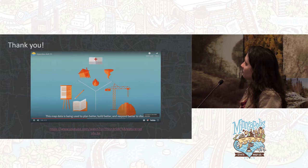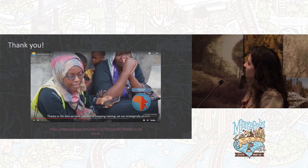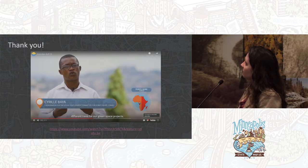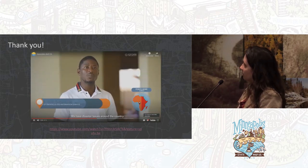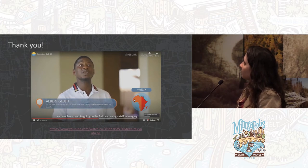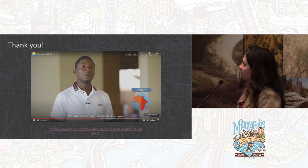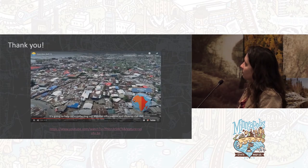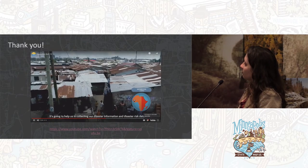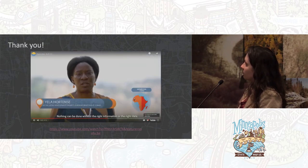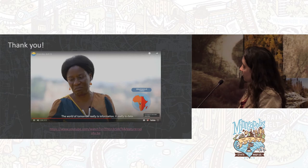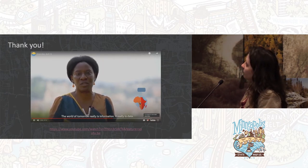This map data is being used to plan better, build better, and respond better to disaster. With the data we have today and our knowledge of cartography, it will allow us to control the different trees we will plant in green space projects. We've had disaster problems across the country — we were used to going into the field using satellite imagery to collect data. But with this tool, we will add more value to this type of work. We can no longer do anything without mastering information, without mastering data. We have so many resources and potentialities to translate into data. The world of tomorrow is truly information, truly data.